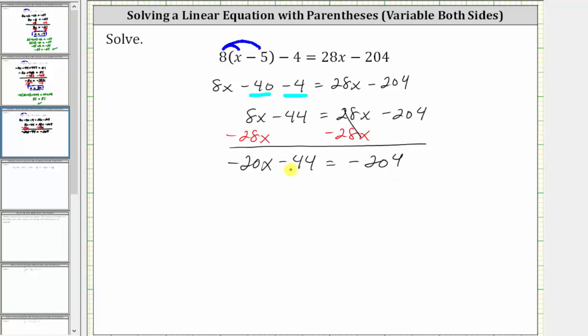Still isolating the variable term, we need to undo the minus 44 by adding 44 to both sides of the equation. Simplifying, negative 44 plus 44 is zero. The left side simplifies to negative 20x equals, on the right side we have negative 204 plus 44.